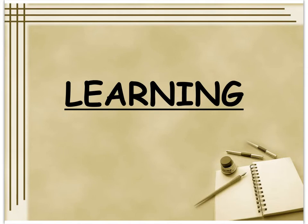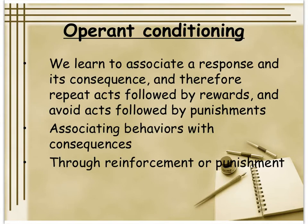Hello and here we go — learning part two, where we look at operant conditioning. In a nutshell, all of operant conditioning is this: learning to associate behavior with consequence. We learn to associate a response and its consequence, and therefore repeat acts that are followed by rewards and avoid acts that are followed by punishments.